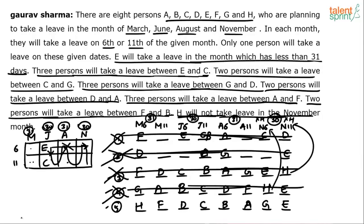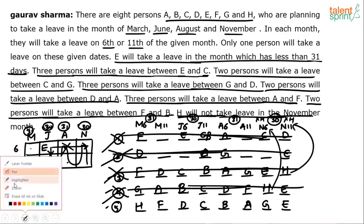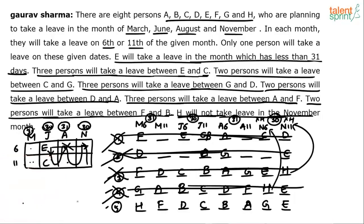Case 5 is the correct answer. The final solution is: March 6th, March 11th, June 6th, June 11th, August 6th, August 11th, November 6th, November 11th — with all persons placed accordingly. Case 5 is the final solution.